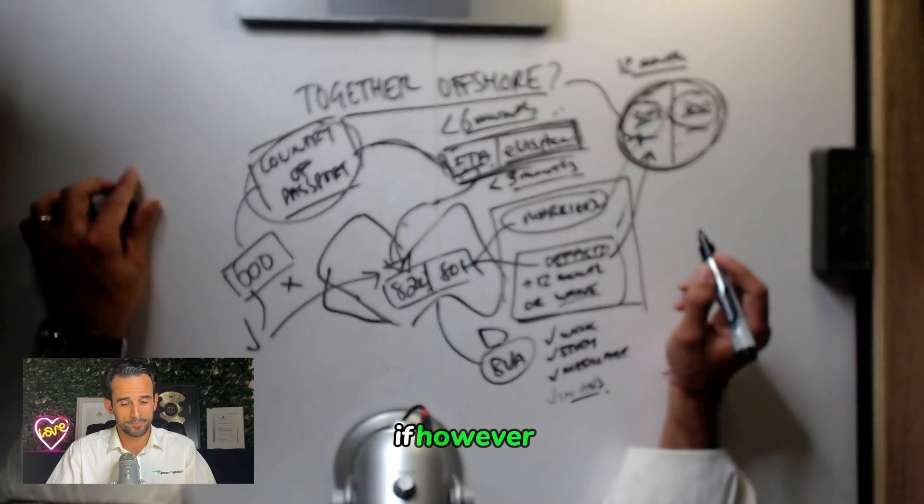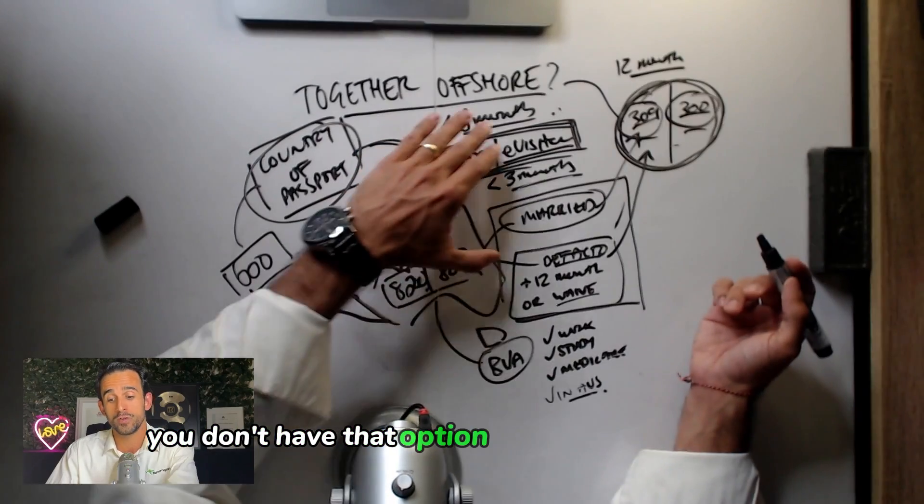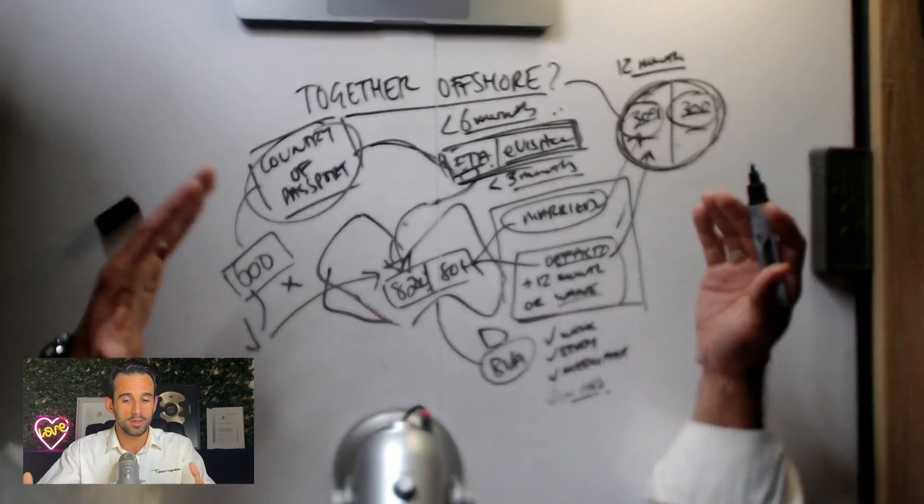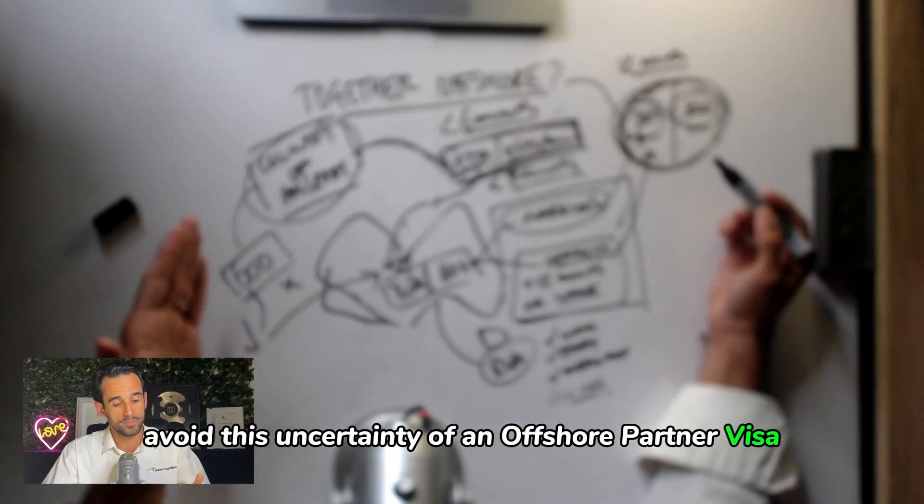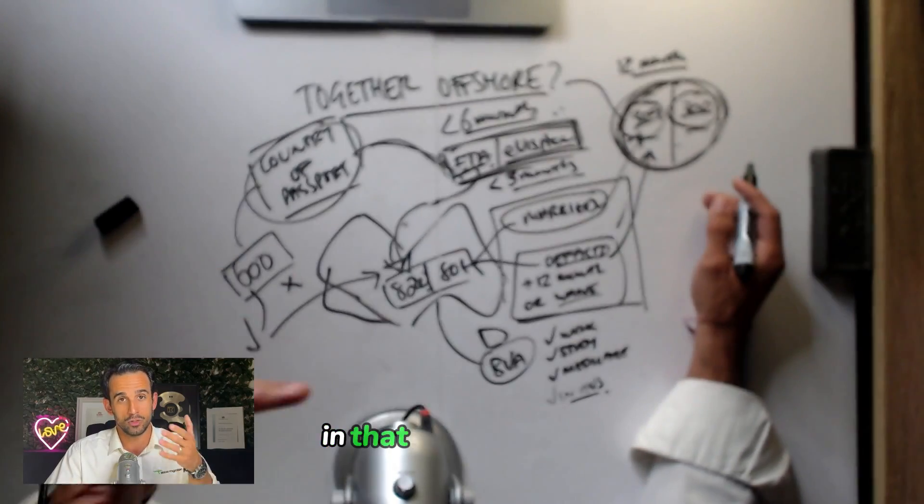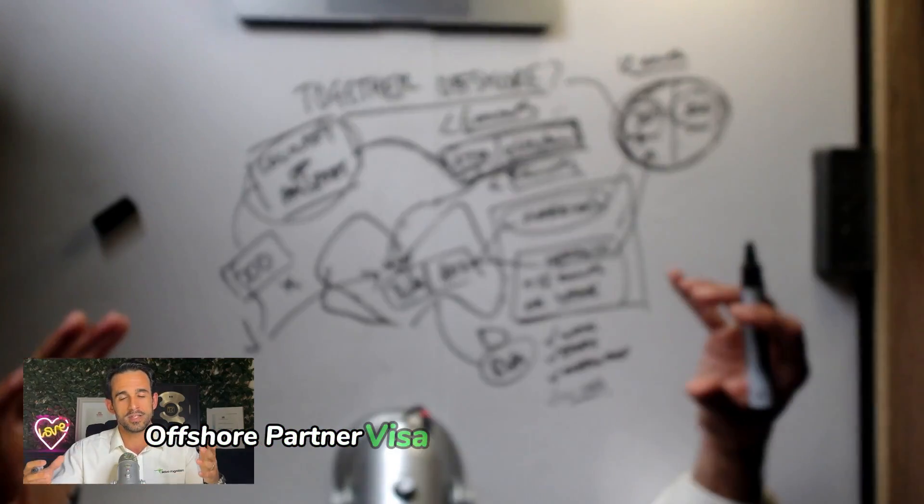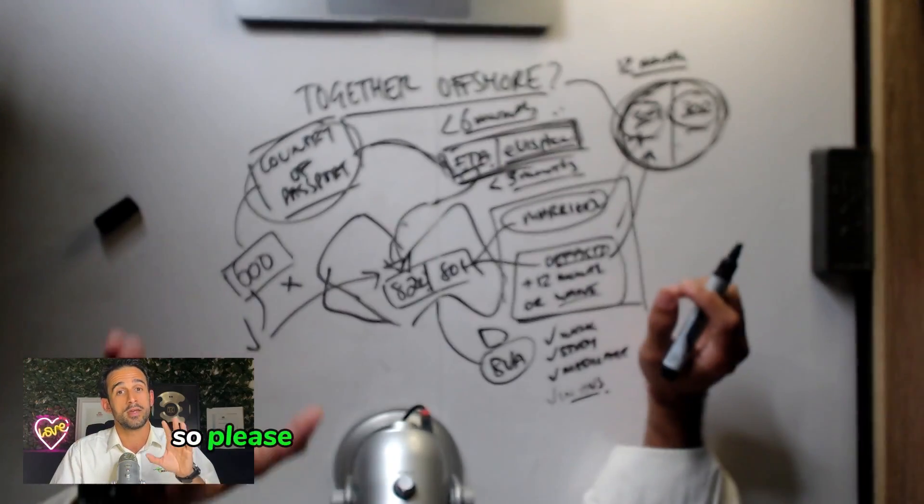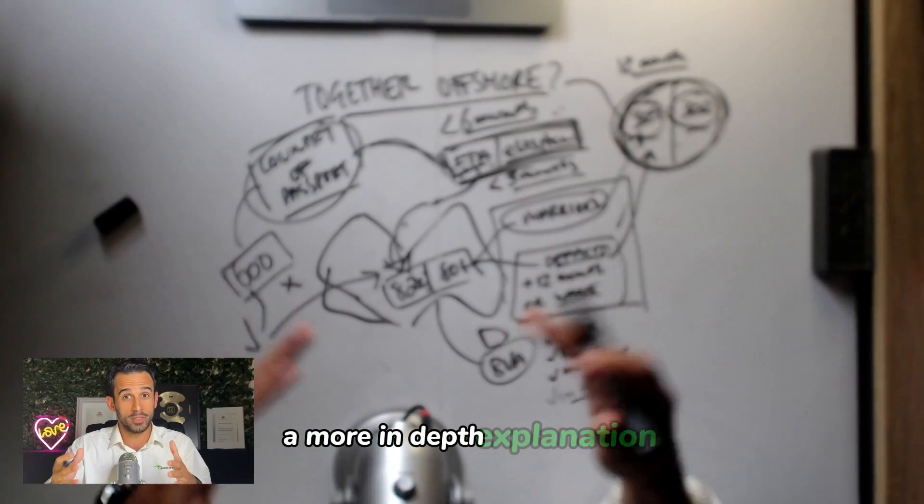If however, you don't have that luxury, you don't have that option of coming in on an ETA or e-visitor, and you're together overseas, and you want to avoid this uncertainty of an offshore partner visa, then it's always worth attempting a tourist visa. And that's something I cover in a lot more detail in that YouTube video that I reference. It's called Get Your Partner Here Fast, Offshore Partner Visa and Tourist Visa Strategies, Options, something along those lines. So please have a look at that video for a more in-depth explanation.